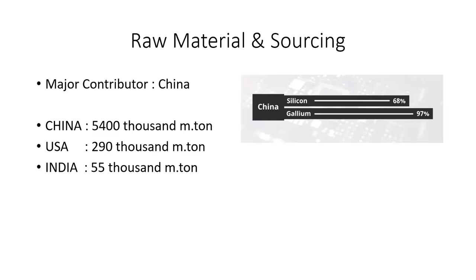When we talk about raw material and sourcing, silicon is the core part of the whole chip. The major contributor is China, which produces around 68% of worldwide silicon and 97% of gallium. China produces around 5,400 thousand metric tons of silicon, while the USA gives 290 thousand metric tons, and India is at 55,000 metric tons. Despite being the largest country by population and geography, India is not able to compete with even the USA, let alone China.